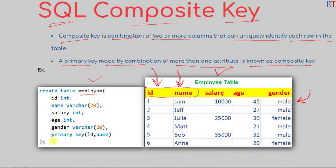we have created the primary key using two columns. So we are using the column id and column name in combination as a composite key to uniquely identify each row of the employee table.